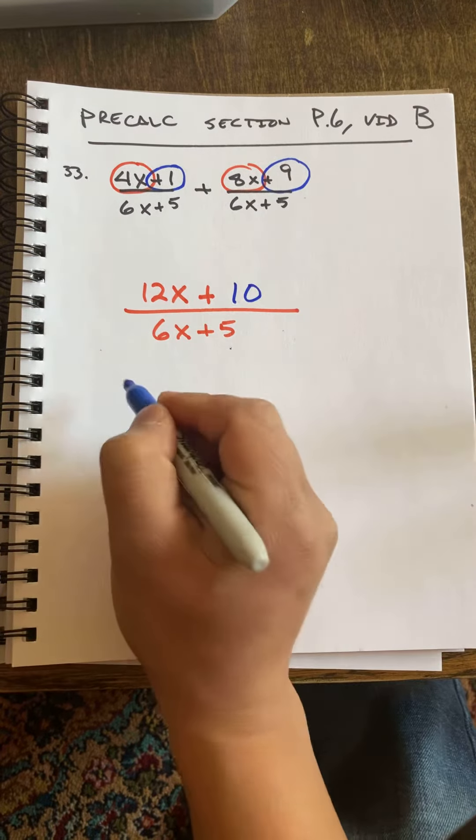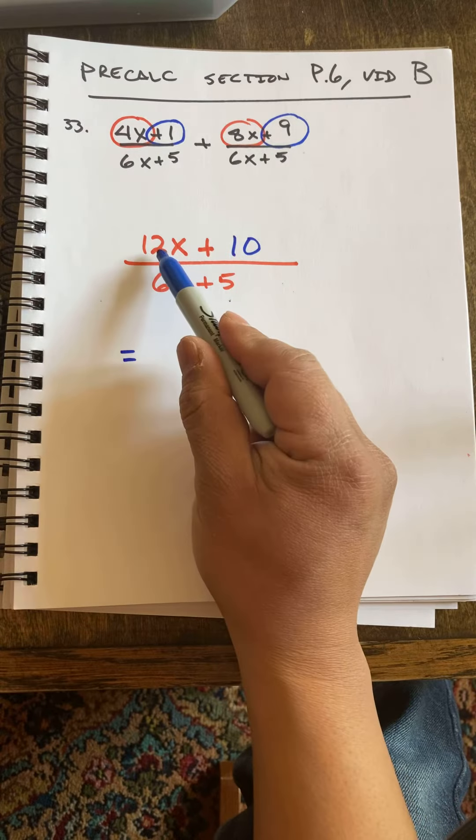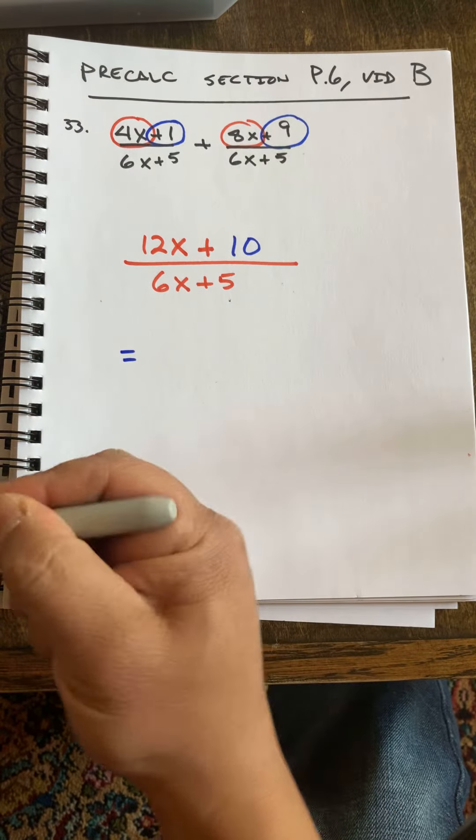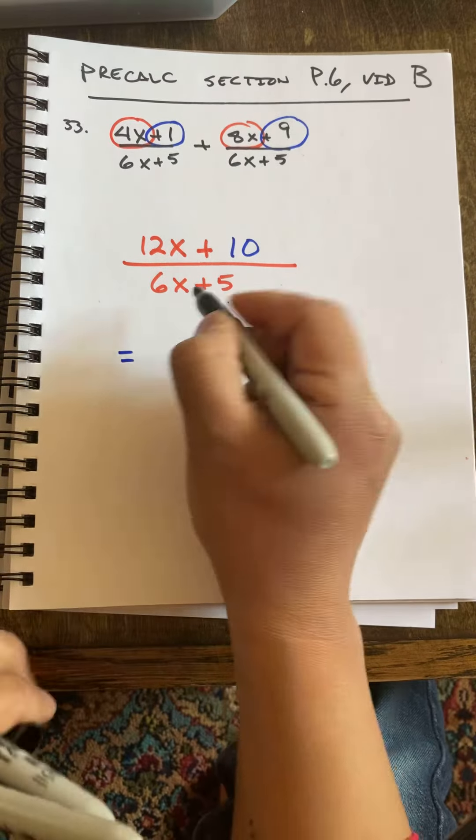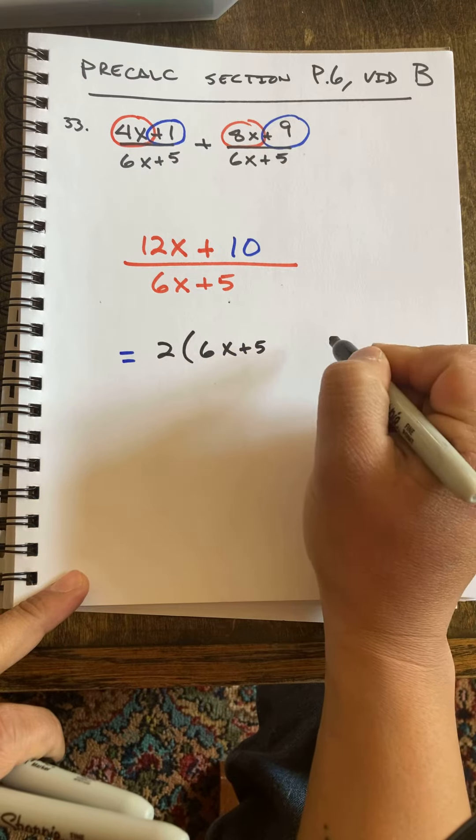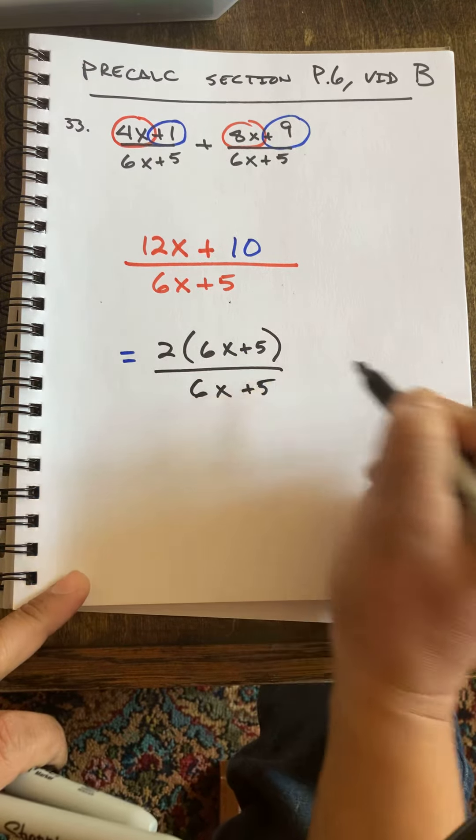Easy. I can simplify this a little more because I know that I can factor a 2 out of here in the numerator and get 2 times 6x plus 5, over 6x plus 5.